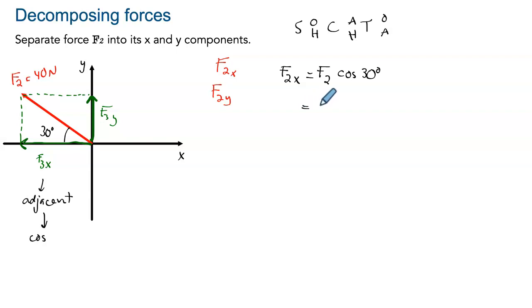And in here, F2 we know is equal to 40 newtons times the cosine of 30 degrees. And I'll let you finish the calculation if needed. Then we can do the same thing for F2y.